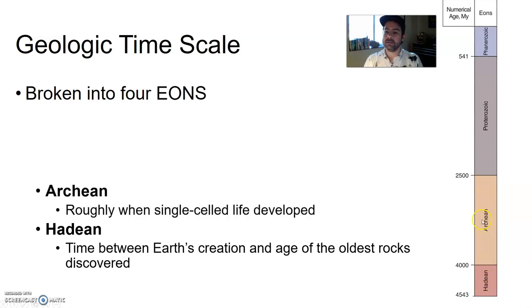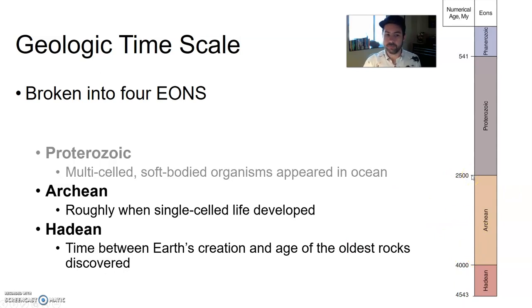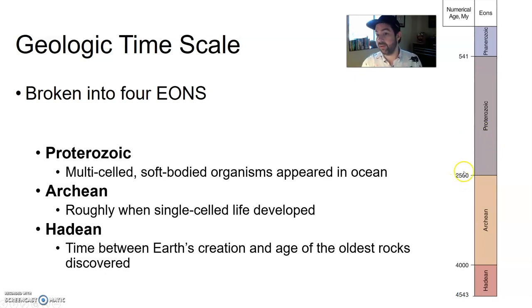Then we have the Archean. This period of time is roughly when single-celled life developed — very simple bacterial organisms. That's all there was from about 4 billion years ago to 2.5 billion years ago. Then in the Proterozoic, you start to get multi-celled, soft-bodied organisms, mostly in the ocean, from 2.5 billion years ago all the way to 541 million years ago.